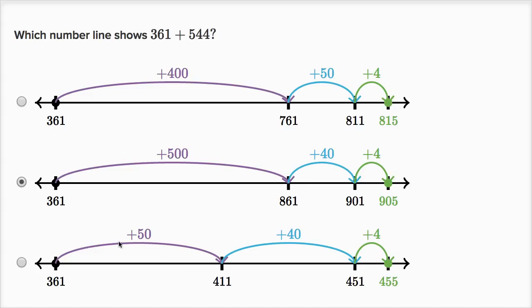This one over here, instead of adding 500, you add 50, which doesn't make sense because we're clearly adding 500s, four tens or 40, and then four ones. Let's do some more examples.